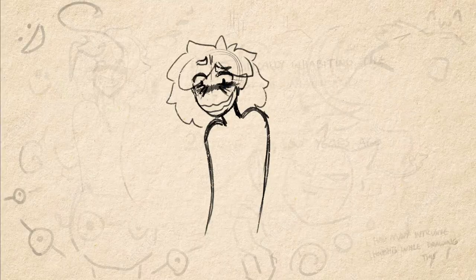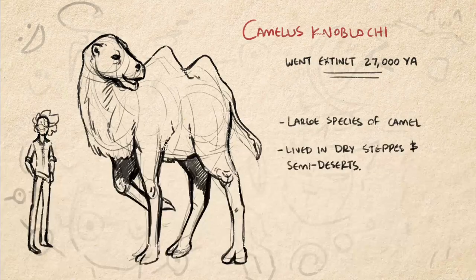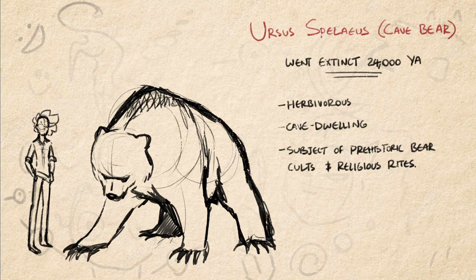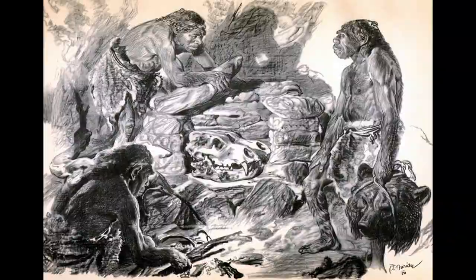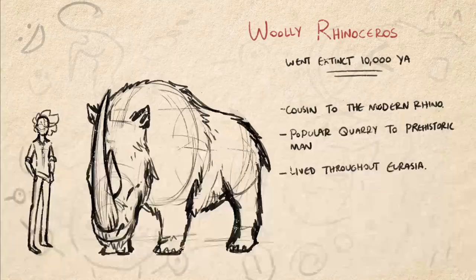Without further ado — the major megafauna. The Camelus knoblochi: a species of large camel that lived in dry steppes and semi-deserts. The cave bear, also known as Ursus spelaeus: a surprisingly herbivorous, cave-dwelling creature. There's a lot more known about cave bears than most megafauna since they lived and died in caves and were better preserved. Interestingly, cave bears are also the focus of certain bear cults that sprung up in Neolithic communities. The woolly rhinoceros: a species that spanned over Eurasia, the woolly rhino is the ancestor of the modern rhino, and was a common quarry for humans and Neanderthals before its extinction 10,000 years ago.